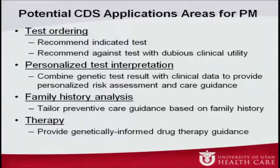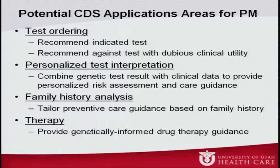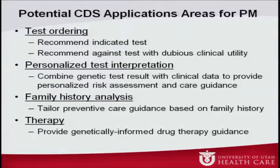You could also personalize test interpretation. Instead of getting a genetic test result back that says here's the genotype and in general this is what it means, you can combine it with clinical data to provide a personalized risk assessment and care guidance. You can also make use of family health histories to tailor preventive care guidance for cancer prevention. And of course, decision support can help provide genetically informed pharmacotherapy guidance.